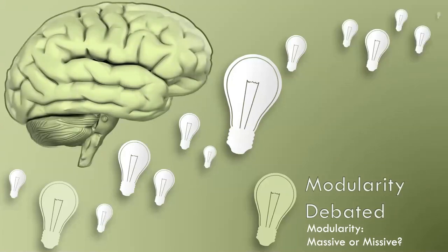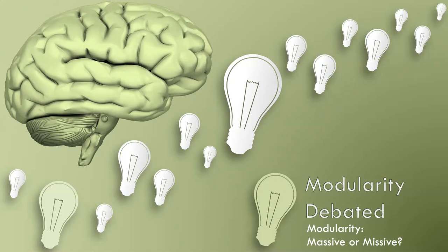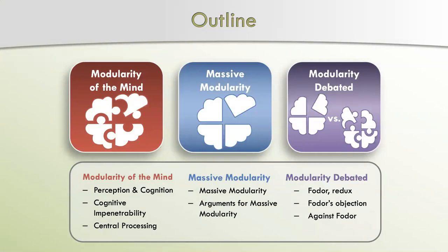Before we get to that, I want to discuss something called modularity. Modularity is a principle of design — you see it in basically anything that's ever been designed. It basically means parts that can fit together neatly so you can rearrange them — discrete modules, so to speak. We're going to consider two alternative views: the modularity of the mind view proposed by Jerry Fodor, who was a big proponent of the language of thought hypothesis, and then an alternative view called massive modularity. Then we're going to debate the two.